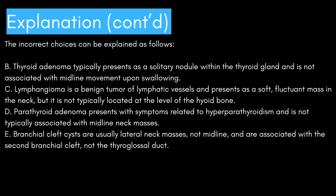The incorrect choices can be explained as follows. B: thyroid adenoma typically presents as a solitary nodule within the thyroid gland and is not associated with midline movement upon swallowing. C: lymphangioma is a benign tumor of lymphatic vessels and presents as a soft, fluctuant mass in the neck, but is not typically located at the level of the hyoid bone. D: parathyroid adenoma presents with symptoms related to hyperparathyroidism and is not typically associated with midline neck masses. E: branchial cleft cysts are usually lateral neck masses, not midline, and are associated with the second branchial cleft, not the thyroglossal duct.